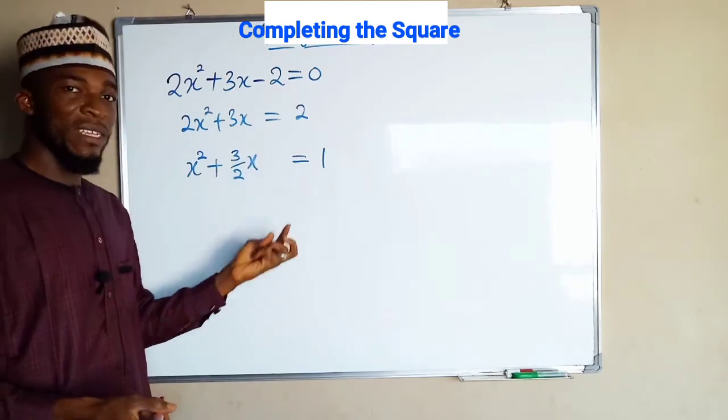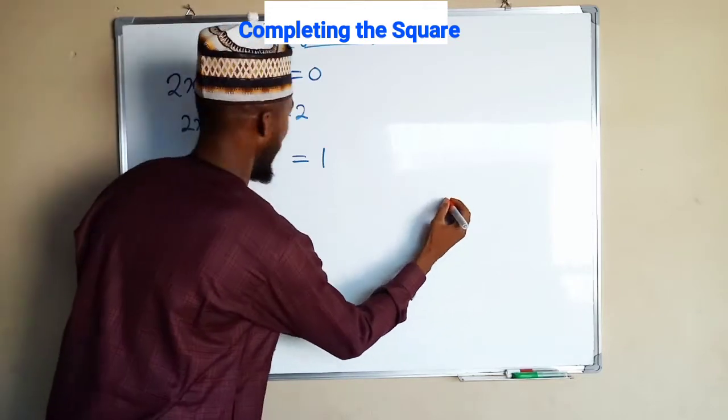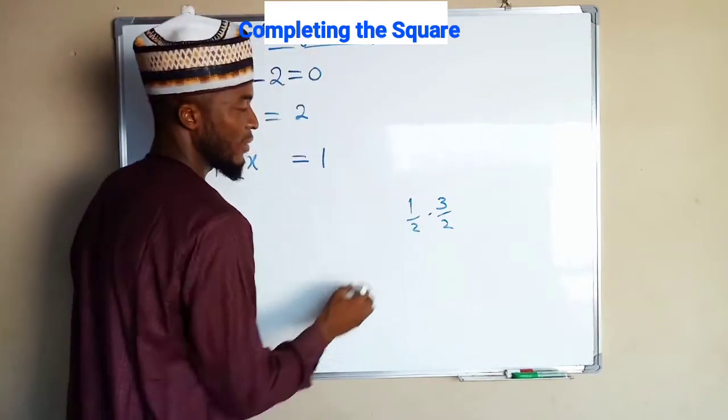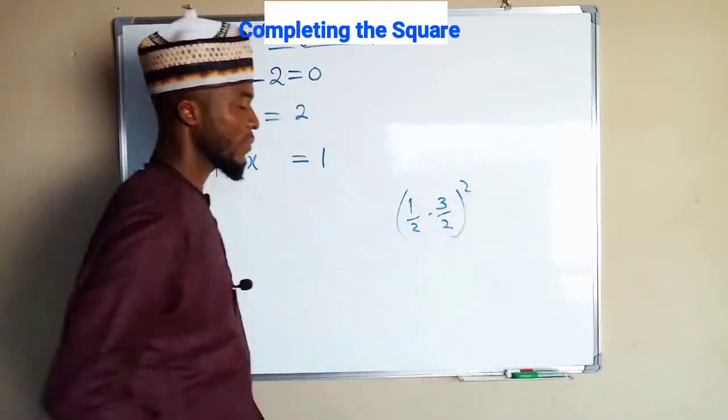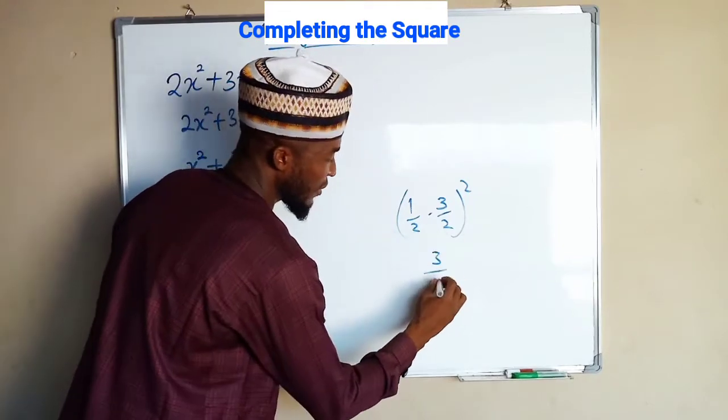What we are going to add here is the square of the half of the coefficient of x. 3 over 2 is the coefficient of x, half of it squared. This time this is 3, this time this is 4, all squared.